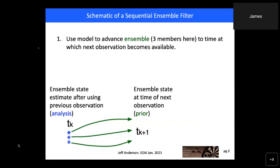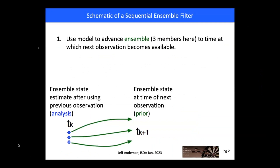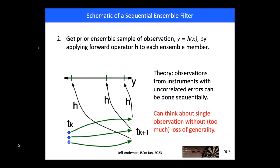In this schematic, we have an ensemble of state vectors at some time T sub K — three are shown here. We make a forecast with the model forward to time T sub K plus one, the next time at which we have one or more observations available. We assimilate the observations one at a time, beginning by computing the forward operators H for each ensemble member.